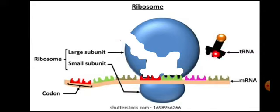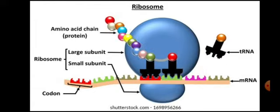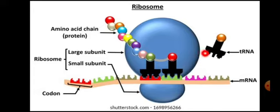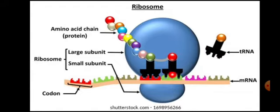Whatever the codon composition is, the tRNA with the complementary anticodon will come and bind. The ribosome then moves along the mRNA. The tRNA binds codon-to-anticodon and carries an amino acid on top. Previously added amino acids form a growing polypeptide chain. The next complementary tRNA comes and binds to the next codon, and its amino acid is added to the growing chain.